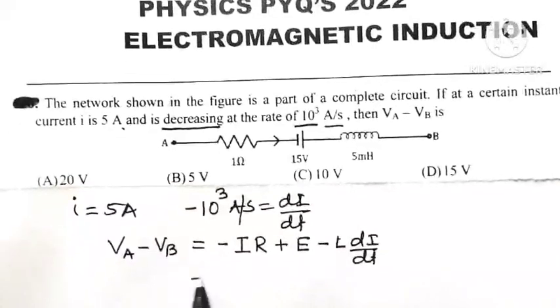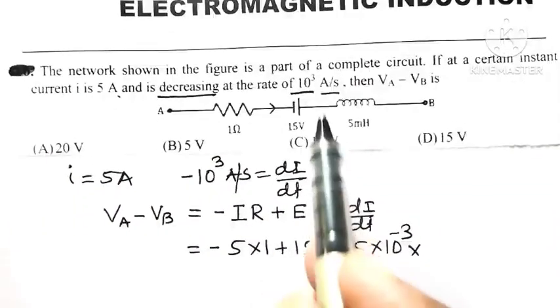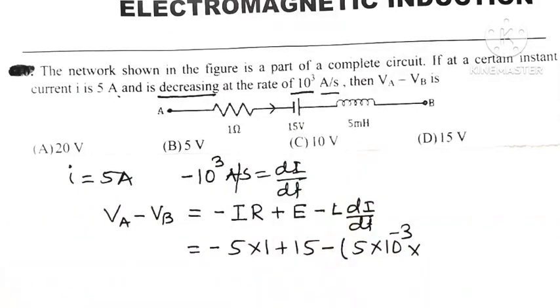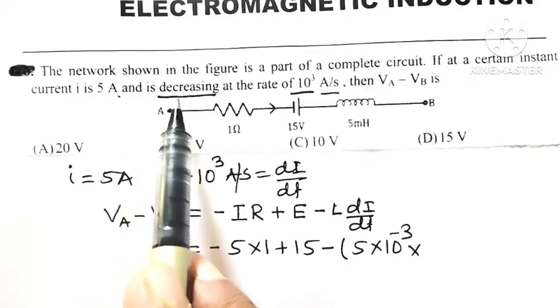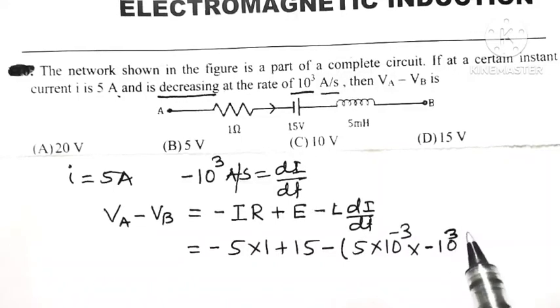So that is equal to minus of, what is the current? 5 into value of resistance is 1 plus EMF is 15 minus of. Here, what is the value of L? 5 milliHenry, 5 × 10⁻³ into dI/dt. dI/dt is 10³ ampere per second. But see here, current is decreasing at the rate of, means it is taken with negative sign minus of 10³ ampere per second.